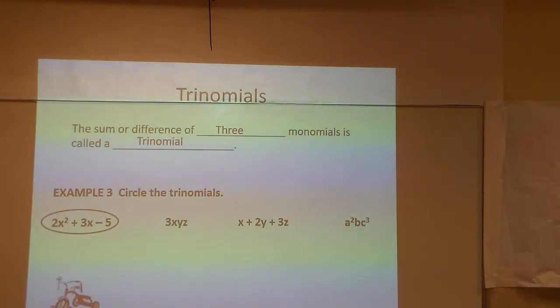So this particular one here, there's a, that's a trinomial. Notice there are three terms. You see a plus or minus sign twice. The 3xy is a monomial. That one's a trinomial. The x plus 2y plus 3z. And the a squared plus bc cubed is a monomial.